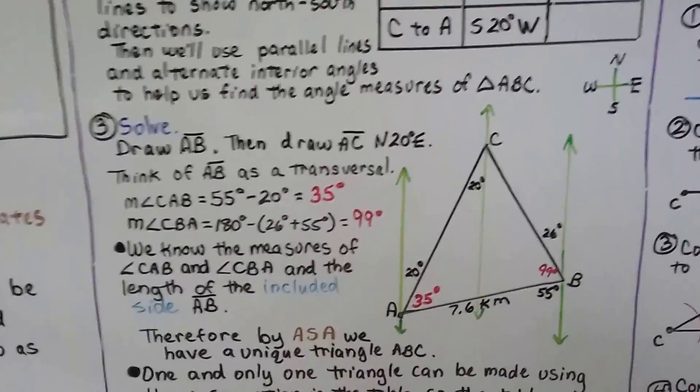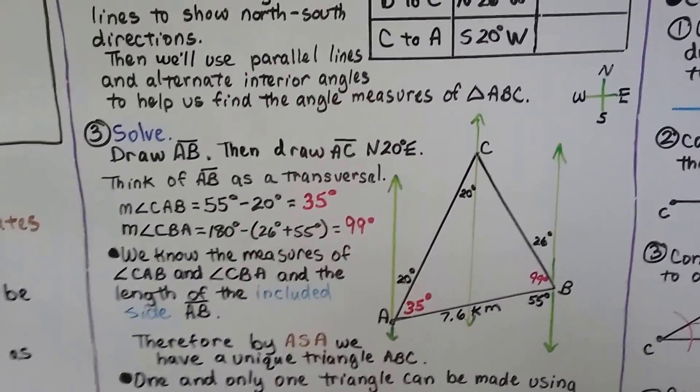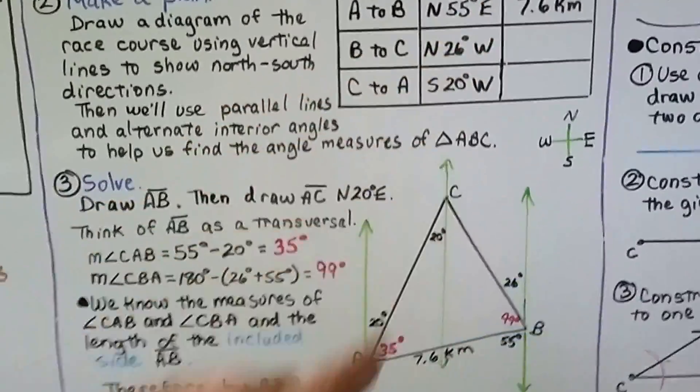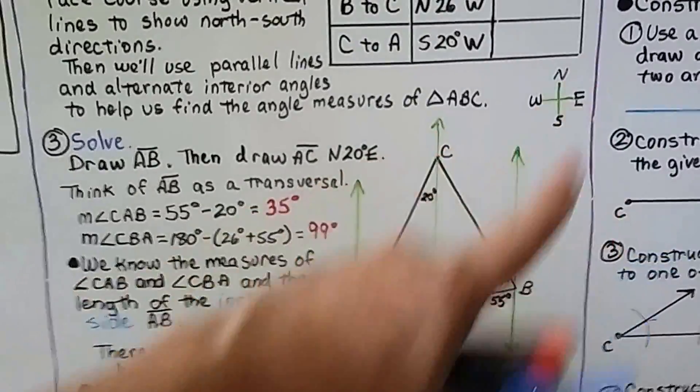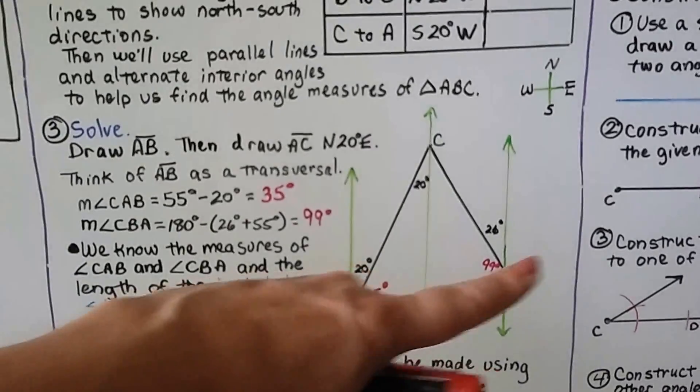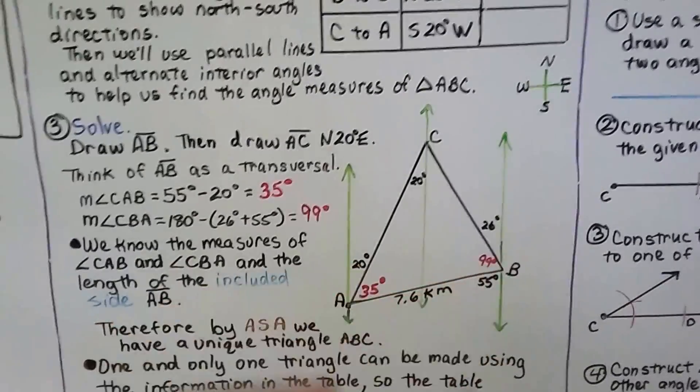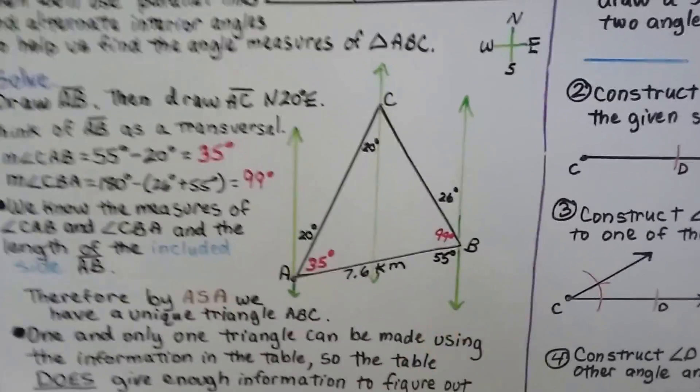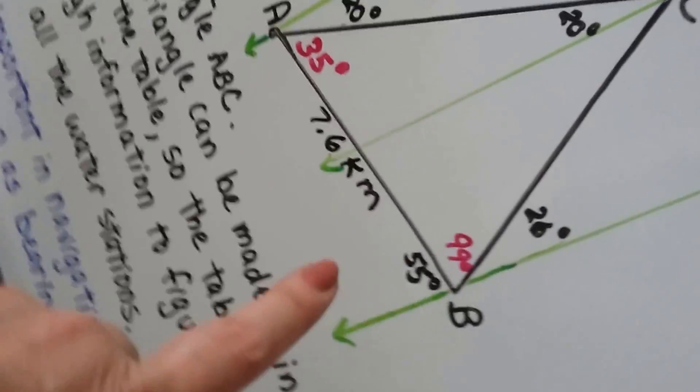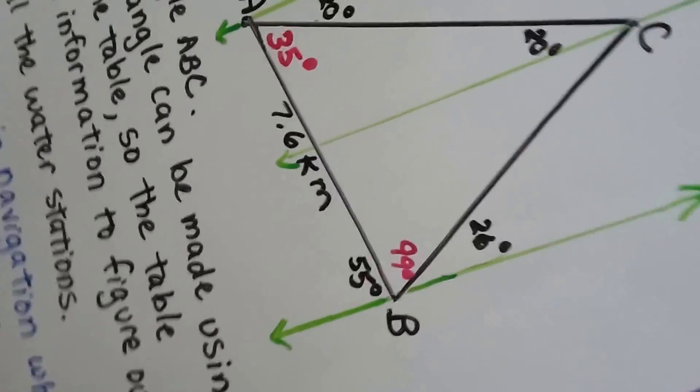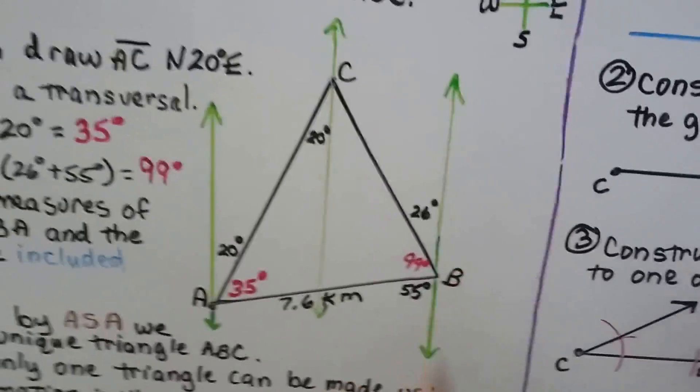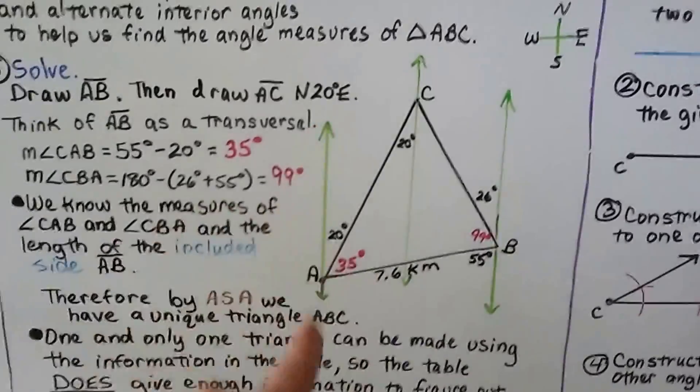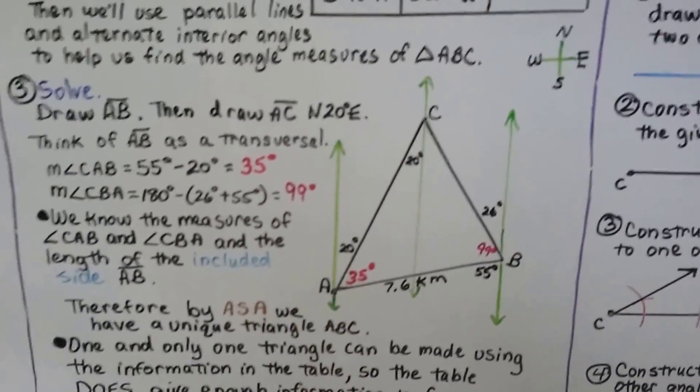For solving it, we draw segment AB. It tells us that from A to B is north 55 degrees east, so it's going to go northeast. What we can do is on this third parallel line, we can make a 55 degree angle right here with our protractor. Once we make that 55 degree angle, we can extend that segment to the first parallel line. Now we have AB.